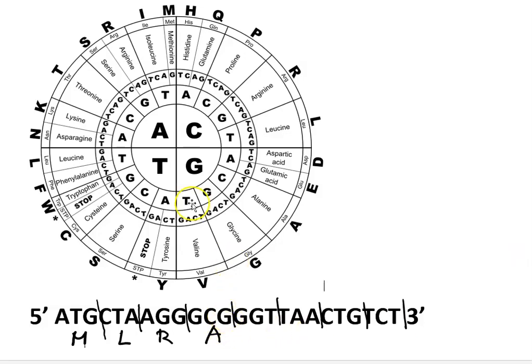We've got GGT. So G in the first, G in the second, T in the third position. And that gives us the amino acid glycine, which is abbreviated with a G.